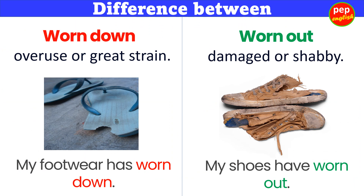Difference between worn down and worn out. Worn down means overuse or great strain. Example: My footwear has worn down. Worn out means damaged or shabby. Example: My shoes have worn out.